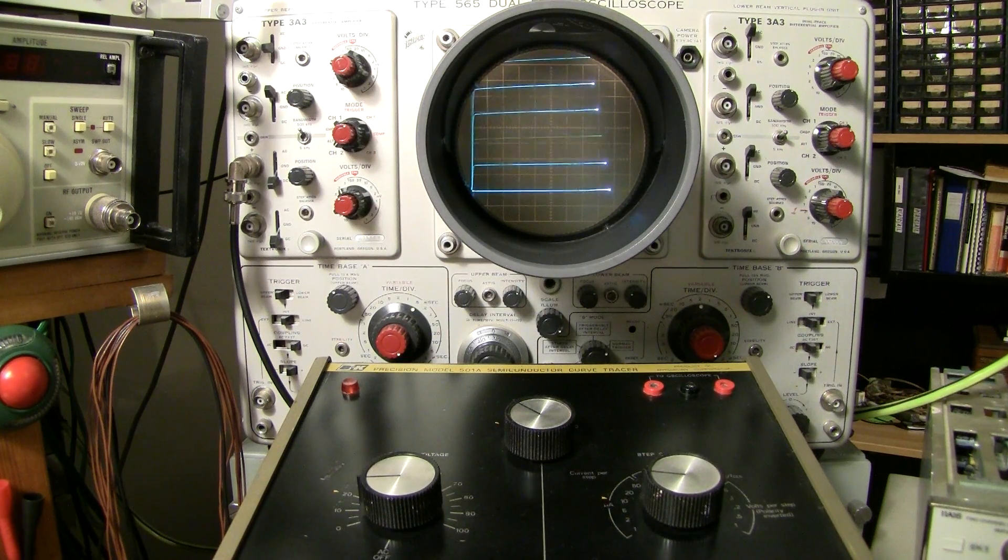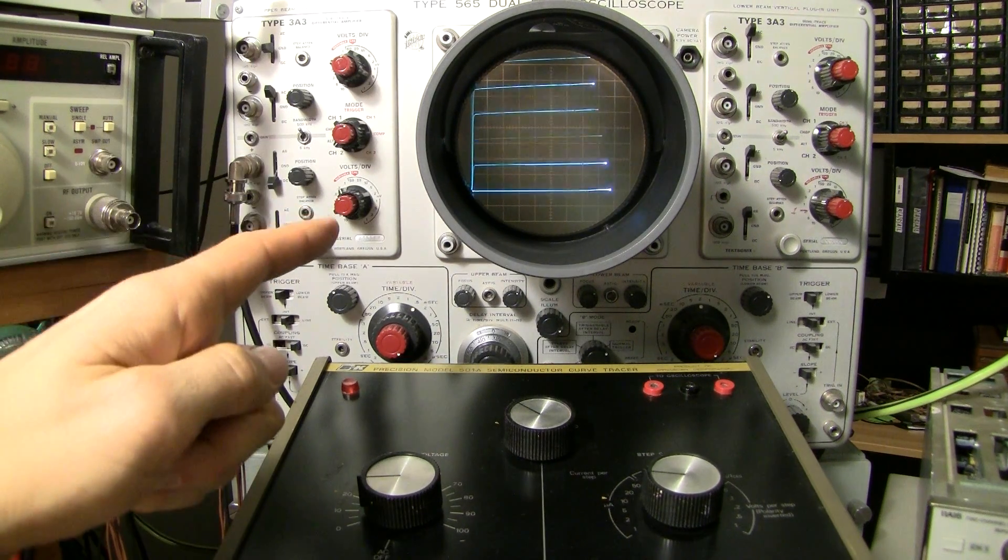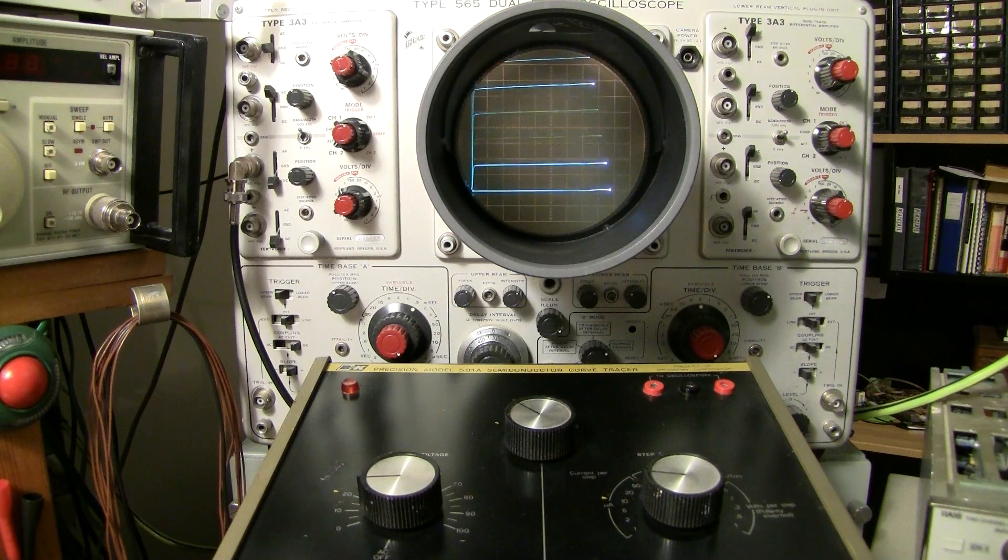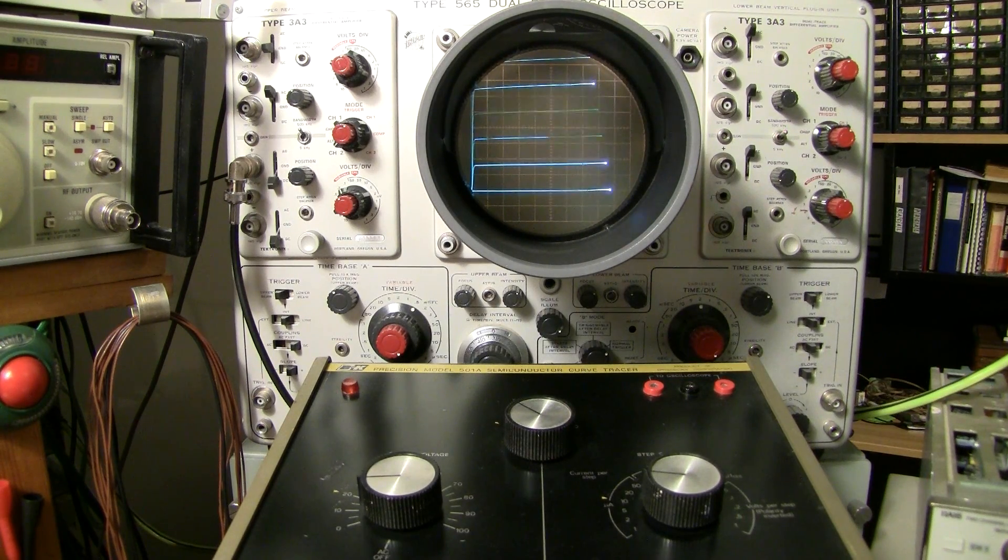And this is a B&K 501 here, this is the curve tracer, and this is the oscilloscope which is a Tektronix Type 565 dual beam oscilloscope.